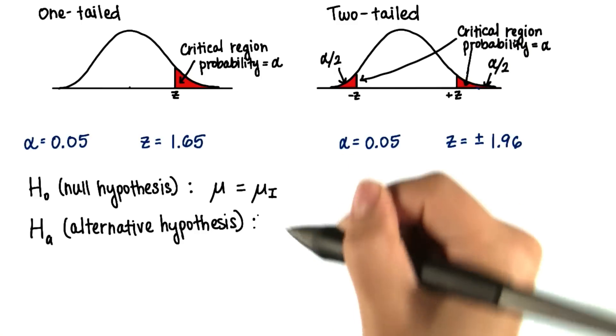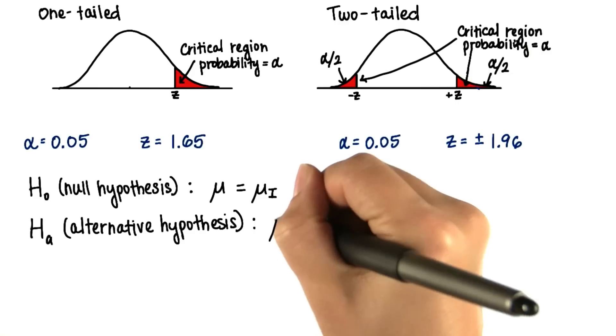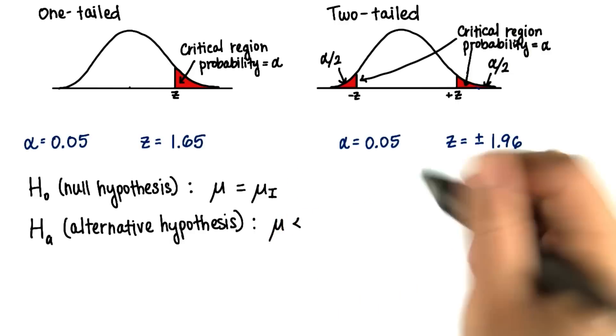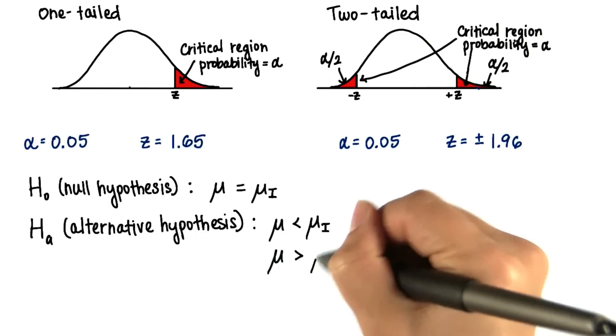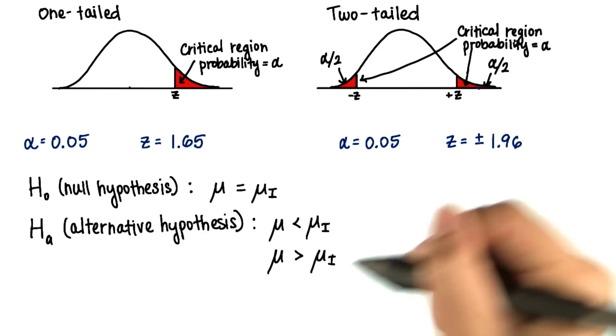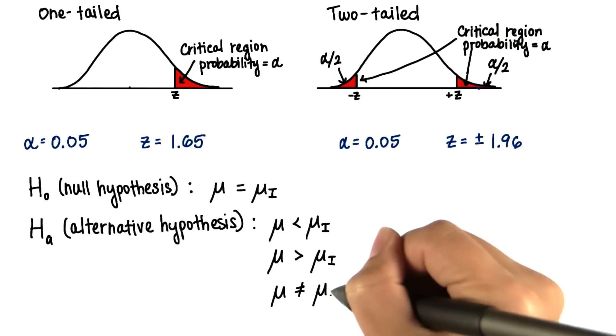The alternative hypothesis guesses that there will be a significant difference. Either the current population mean will be less than that after the intervention, or the current population mean will be greater, or that it'll just be different, and we don't predict a direction of the treatment.